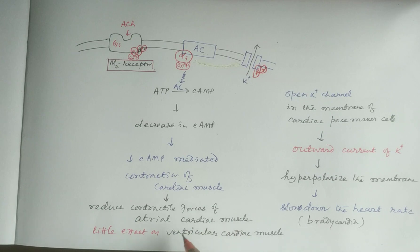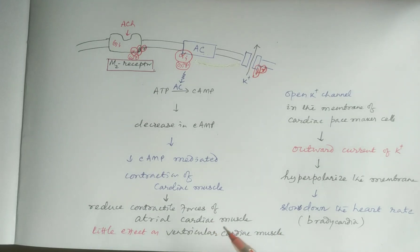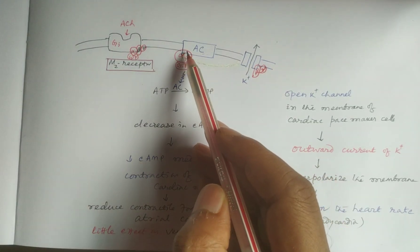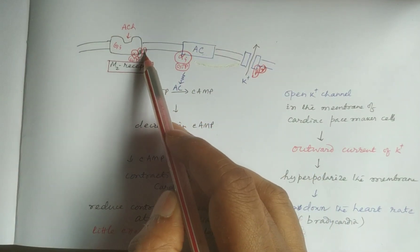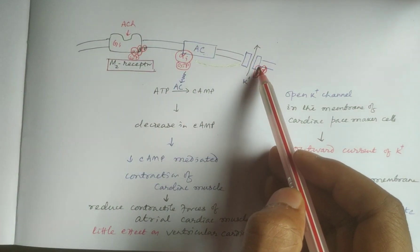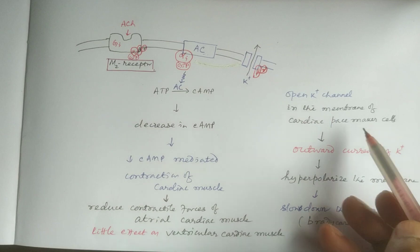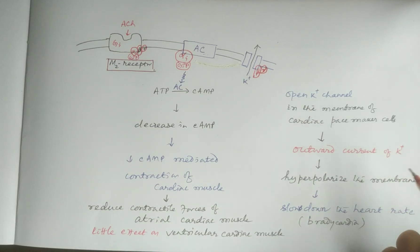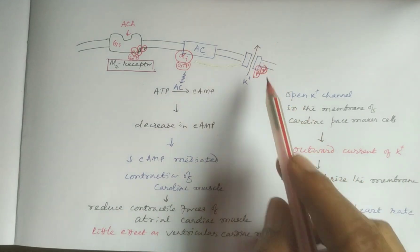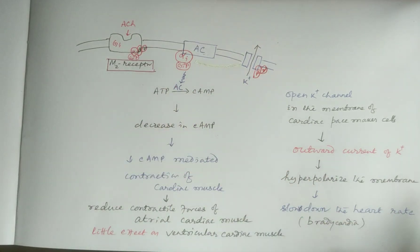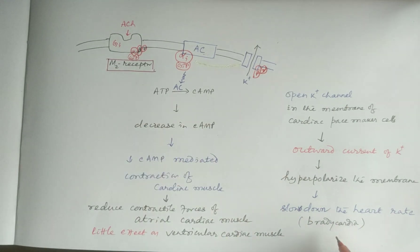This reduces contractile forces of atrial cardiac muscle, though there is little effect on ventricular cardiac muscle, producing bradycardia. Similarly, the beta-gamma subunit has affinity to bind with potassium channels, opening them in the membrane of cardiac pacemaker cells such as the SA node. This causes an outward potassium current, resulting in hyperpolarization of the cardiac cell membrane and slowing of the heart rate, producing bradycardia.